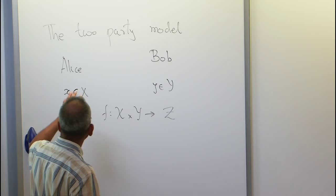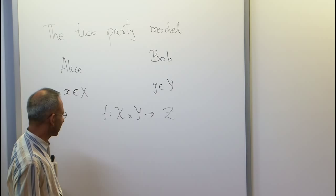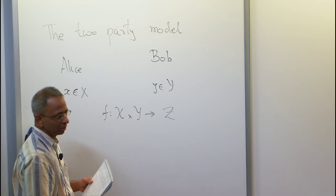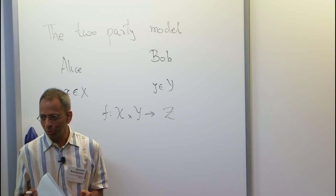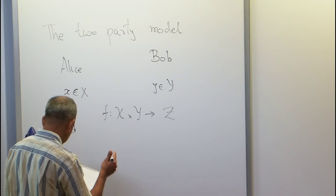This is the familiar setup. You have two parties: one is called Alice, the other is called Bob. Alice has an element as an input x from some alphabet capital X, and Bob has an input y from some alphabet capital Y. They have a fixed function in mind which they wish to compute. This is a broken-down model of distributed computing, and they wish to compute this f on their inputs x, y by exchanging messages.